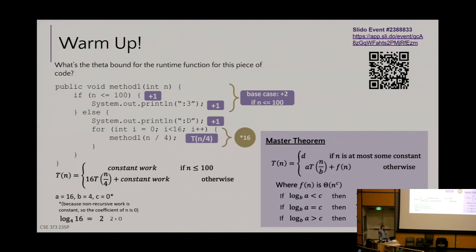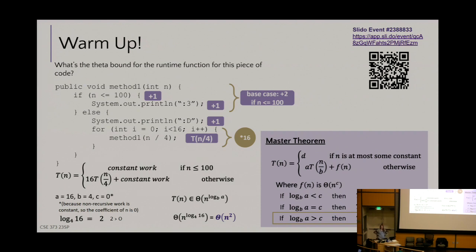Now we plug and chug. We do log base B of A, which is log base 4 of 16, which is 2. Then we compare that to the value of C. Since 2 is greater than C, we are in this case of the master theorem. We plug in our numbers and we get theta of n to the log base 4 of 16. But we just determined that log base 4 of 16 is 2. So really, we get n squared. Any questions on this journey, as I shall be asking you to do it on your own for the exercises.